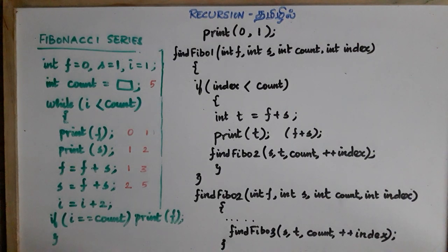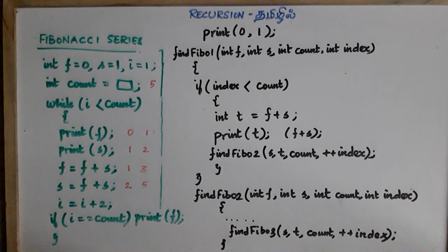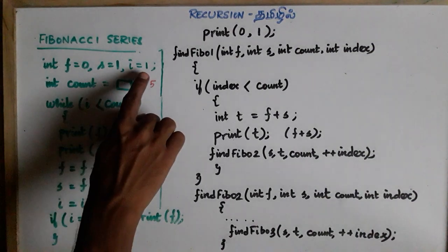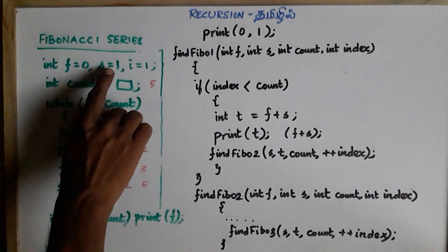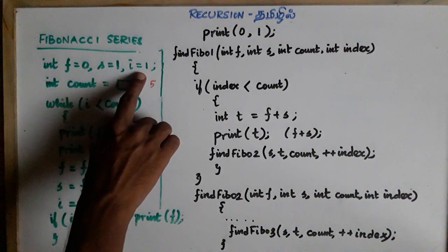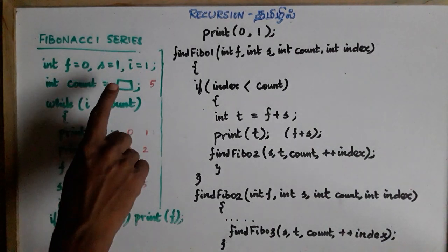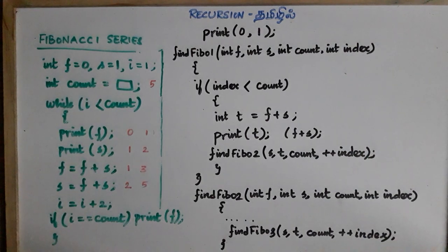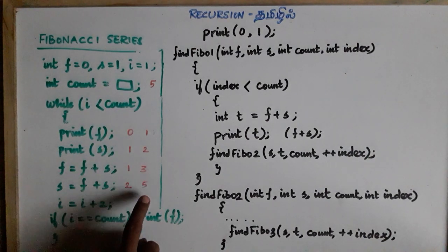In the Fibonacci series, we know that 0 and 1. We add 2 numbers: the first number is 0 and the second is 1, so 0 plus 1 is 1. Then the next number is 2, then 3, then 2 plus 3 is 5. This is the first number and second number building the series.